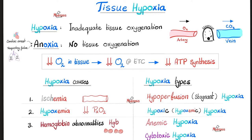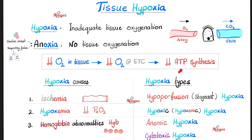Let's review what we have said before. Tissue hypoxia — what's the definition? Inadequate tissue oxygenation; the tissue is not getting enough oxygen. What is anoxia? An means no — no oxygen going to the tissue. Anytime I have less or no oxygen going to the tissue, it means there is less oxygen available in the mitochondrial electron transport chain, which means I will be unable to make ATP via ATP synthase enzyme. That's why hypoxia is dangerous — if you have hypoxia, you have no energy, which decreases your chances of survival.